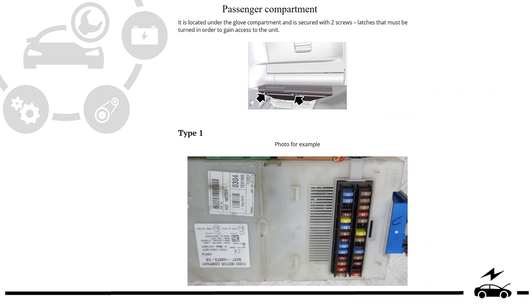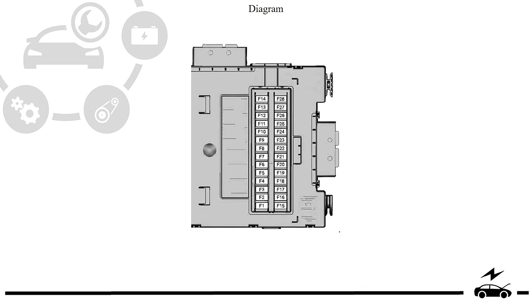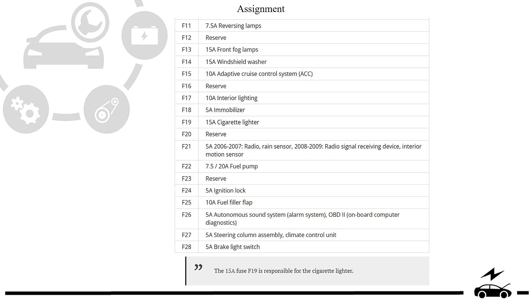Passenger compartment fuse box. Type 1. Location, photo, and diagram are shown, along with location and assignment details.